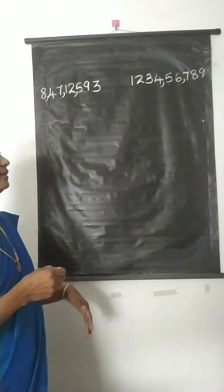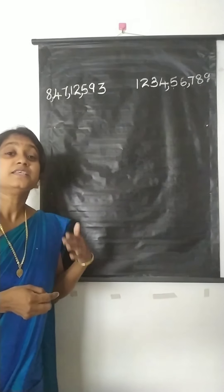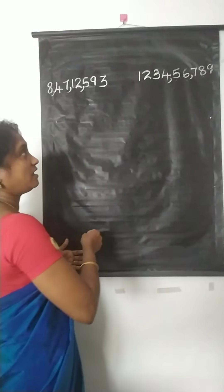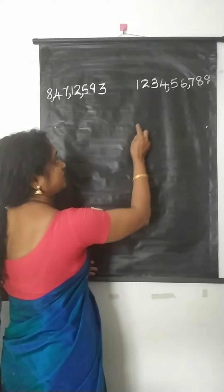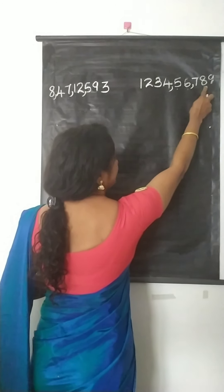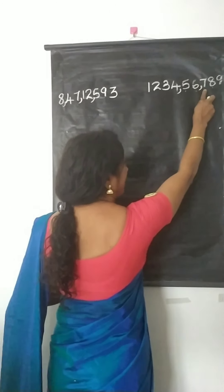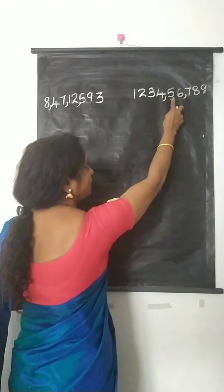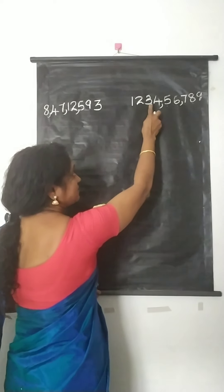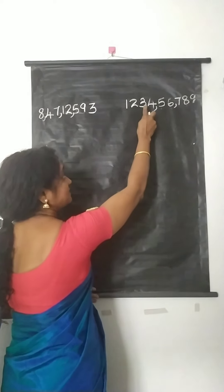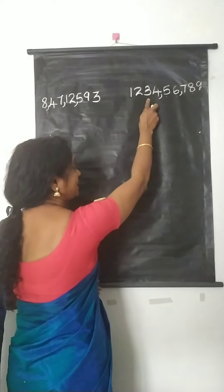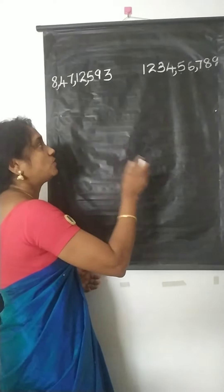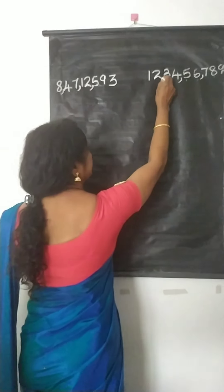And the next comma comes after 7 digits from the right. Counting from the right: 1, 2, 3, 4, 5, 6, 7 — the seventh digit is 3. Therefore, the next comma comes in between 2 and 3.